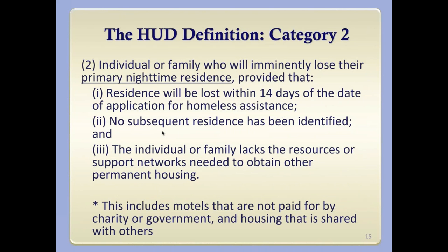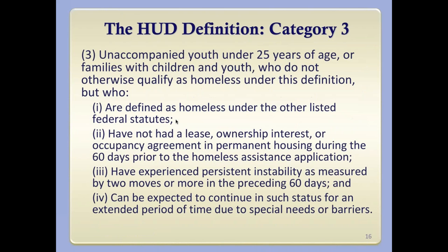Category two of the HUD definition — sometimes referred to as 'imminent risk' — covers an individual or family who will imminently lose their primary nighttime residence, provided it will be lost within 14 days, that no subsequent residence has been identified, and the individual or family lacks the support networks needed to obtain permanent housing. Importantly, primary nighttime residence here includes motels not paid for by charity or government — where someone is using their own income — and also housing shared with others. So motel families and those staying with others would qualify under category two under these specific conditions.